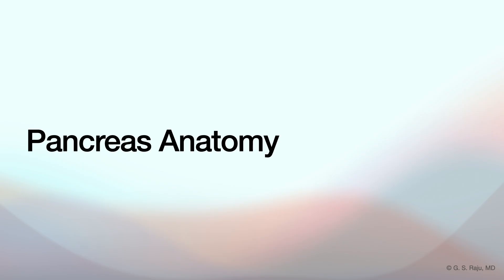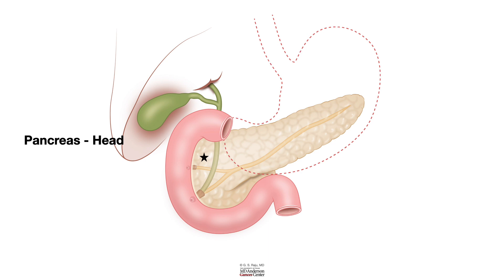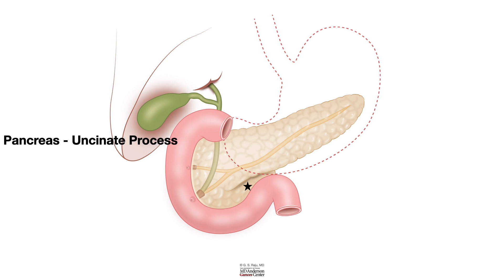The pancreas sits behind the stomach — posterior. Its head is nestled right into that C-shaped curve of the duodenum, the C-loop. Anatomically, we divide it into the head, the body — which stretches across behind the stomach — and the tail, which points towards the spleen. There's also the uncinate process, a little hook extending from the head, deeper and more posterior, near the lower parts of the duodenum.